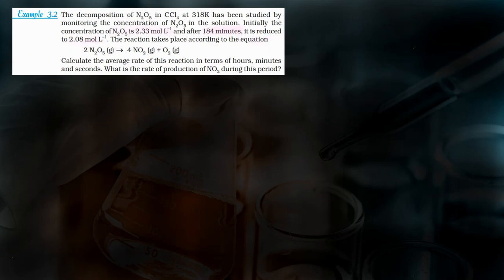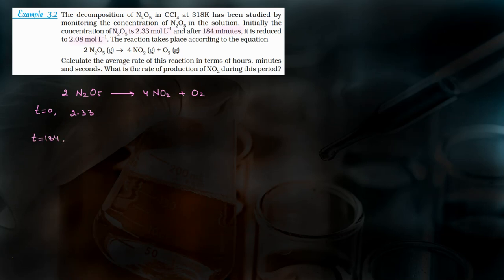Initially the concentration of N2O5 is 2.33 mol per liter. After 184 minutes it is reduced to 2.08 mol per liter. The reaction takes place according to the equation: 2N2O5 → 4NO2 + O2. So at T=0, initial concentration of N2O5 is 2.33 mol/L, and after 184 minutes the concentration of N2O5 is 2.08 mol/L. These are the given values.